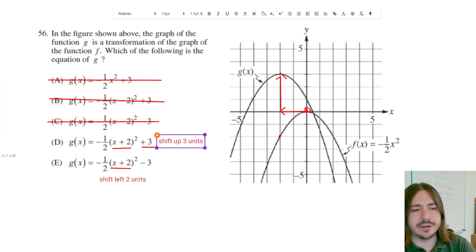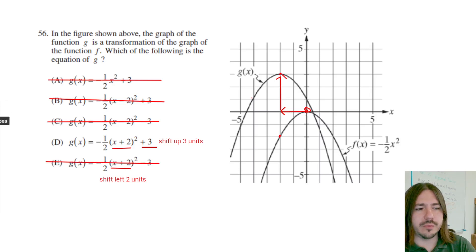That's basically it. This other one, this minus 3, it would be minus 3 if it was shifting down rather than up. So we can eliminate this answer choice. The only correct answer choice here is going to be choice D.